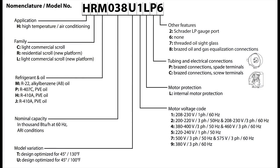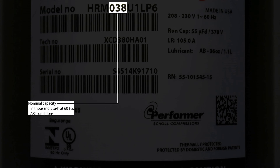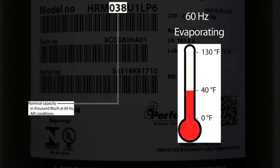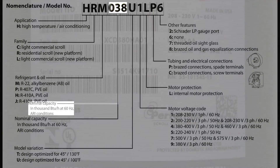The next three digits of the model number signify the nominal capacity of the compressor in thousands of BTUs per hour. The nominal capacity is determined by using standard AHRI conditions at 60 Hz, with 45 degrees Fahrenheit for the evaporating temperature and 130 degrees Fahrenheit for the condensing temperature.